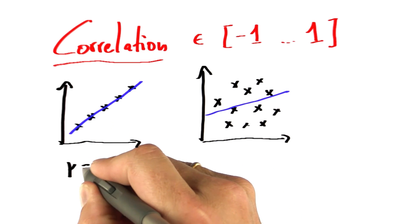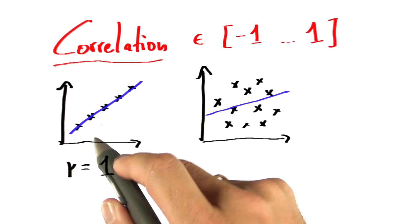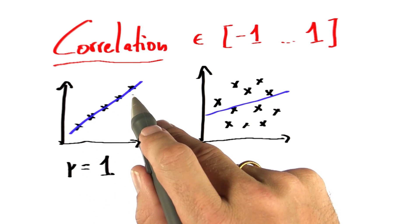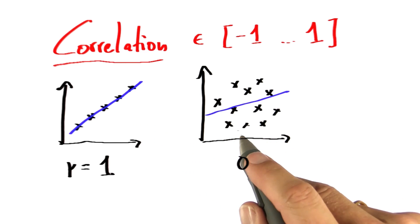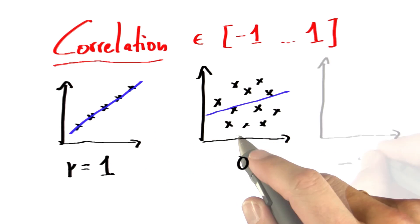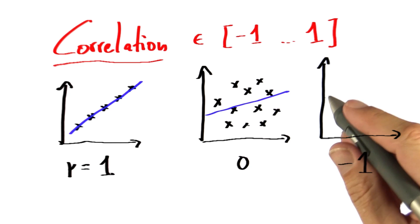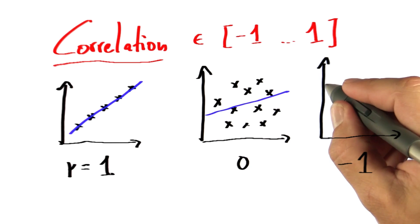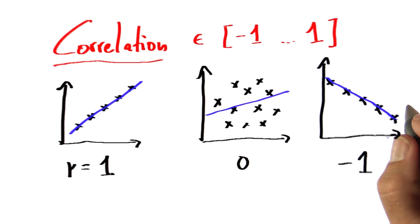So the correlation coefficient, often called r, is 1 if the data is perfectly aligned with a line. It's 0 if there seems to be no relation between the two different axes in the data. And it also can be minus 1 in the case where the data, in fact, is still perfectly aligned, but there's a negative relationship between one variable and the other variable.